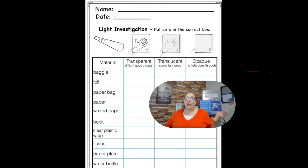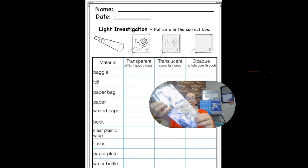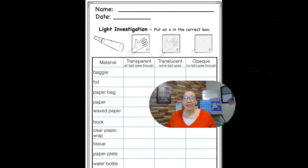Now, if you do not have something, the next one says foil. If you do not have any foil, you can cross out foil and you can write something else that you have at your house. So maybe you have a chair, and you want to see the chair. So go ahead and write whichever one you're using, and then explore. Is it transparent, translucent, or opaque?